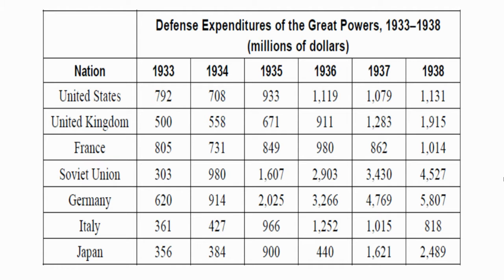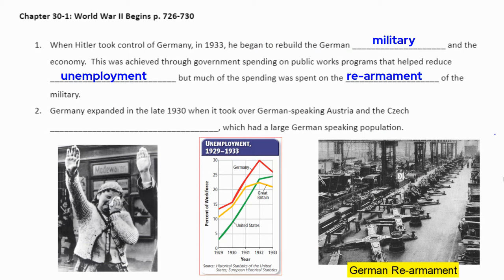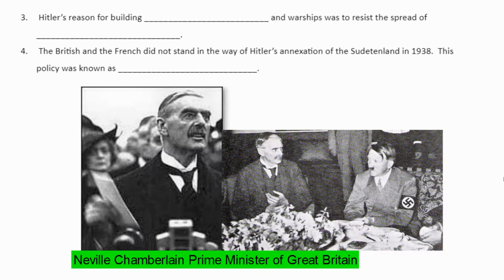Compare that to the United States or Great Britain — we're a little bit behind. Starting in 1933, the United States had more money being spent on the military than Germany, but it isn't going to take very long, less than a year, for the Germans to outspend us. Through 1933 to 1938, we're really not keeping up, and the same could be said with the other Allies, maybe with the exception of the Soviet Union. Germany expanded in the late 1930s when it took over German-speaking Austria and a Czech region known as the Sudetenland, which borders Germany and has a very large German-speaking population — Hitler wanted to bring those people back into the German Empire.